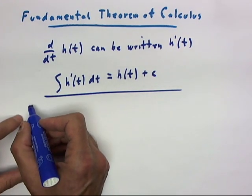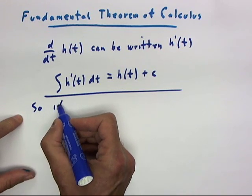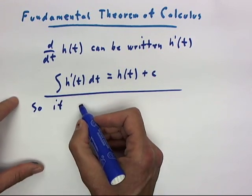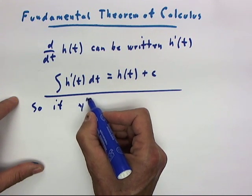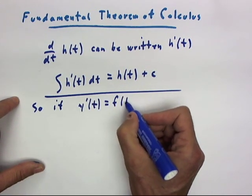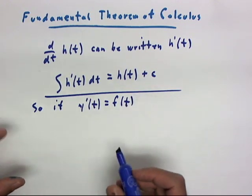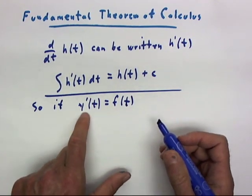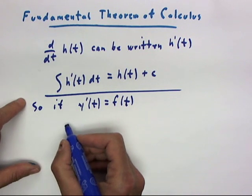So if we have the equation y prime of t equals f of t, we can solve this equation by integrating both sides with respect to t.